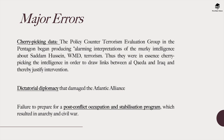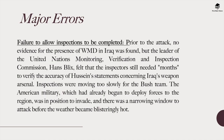There was also a dictatorial diplomacy that damaged the Atlantic alliance, and a failure to prepare for a post-conflict occupation and stabilization program in Iraq, which resulted in anarchy and civil war once Saddam Hussein was toppled and killed. Another important error was the failure to allow inspections to be completed. Prior to the attack, there was no evidence of weapons of mass destruction in Iraq. The leader of the UN Monitoring, Verification and Inspection Commission, Hans Blix, felt that inspectors still needed months to verify the accuracy of Hussein's statements. Inspections were seen as moving too slowly for the Bush team, and the American military was already deploying forces, with a narrowing window to attack before the weather became too hot.